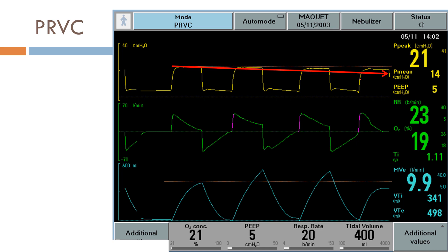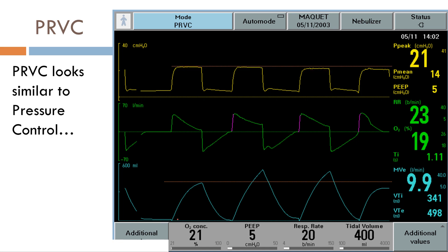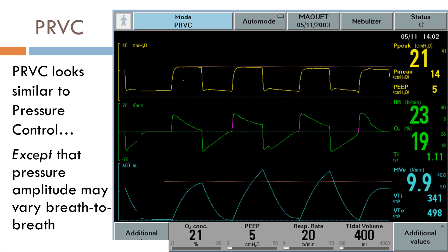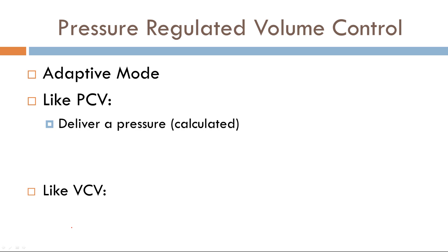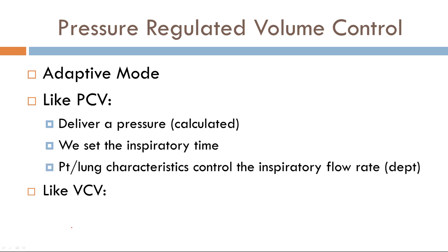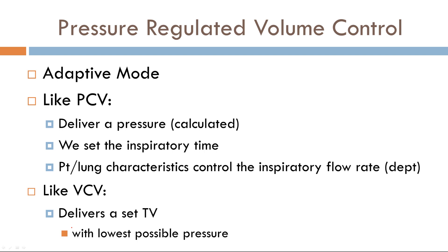Now it's a little odd to have a mode of ventilation where your target variable is not something that you input. PRVC looks pretty similar to pressure control — the waveforms look about the same, and flow is your dependent variable. However, the pressure amplitude may vary from breath to breath. So PRVC is an adaptive mode, and the pressure will change with time as compliance changes. It uses features from both pressure assist control ventilation and volume assist control ventilation. Like pressure control, it delivers a pressure, but this pressure is calculated; we set the inspiratory time as the cycle variable, and flow is completely dependent on the patient's demands or lung characteristics. Like volume control, you deliver a set tidal volume with the lowest possible pressure.